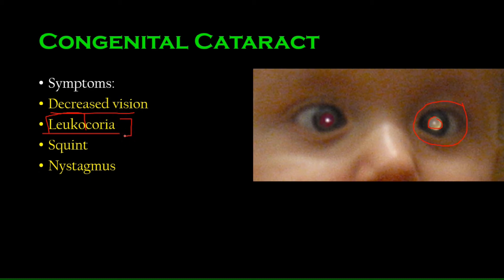Leukocoria is a very important indicator of many diseases, not just congenital cataract. The differential diagnosis of leukocoria is critical — conditions like retinoblastoma can be life-threatening. Leukocoria should never be taken lightly; prompt diagnosis and testing must be done to ensure the infant is safe.